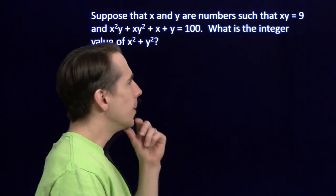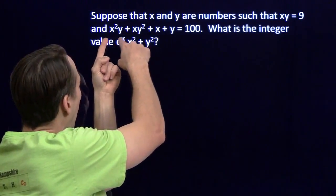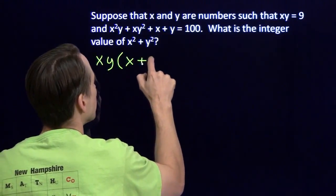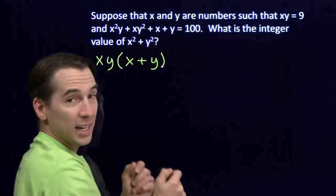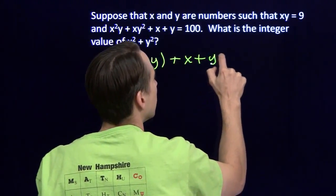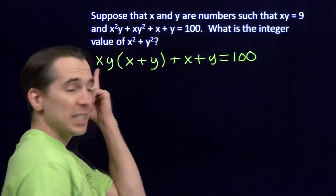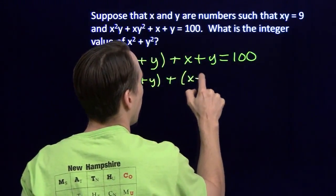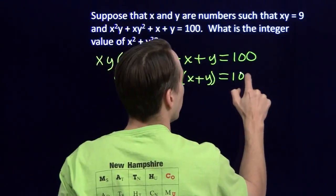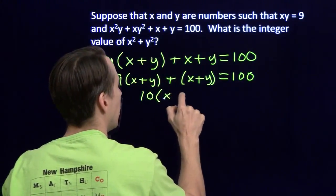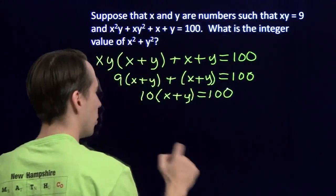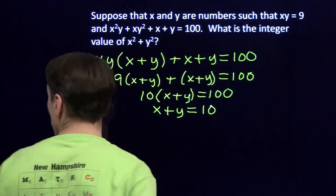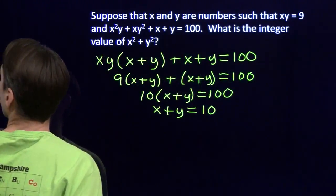I know x times y, and when I look at this, I can factor an xy out of these first two terms. I can write this long equation as xy times x plus y. I'm just factoring the xy out of x squared y and xy squared. Equals 100. Now, I know that this xy is 9, so I have 9 times x plus y plus another x plus y equals 100. So I can combine these, and I say this is 10 times x plus y equals 100. And of course, that means x plus y is 10. That's much simpler than the mess we were making back there.